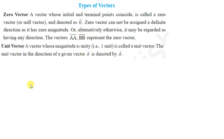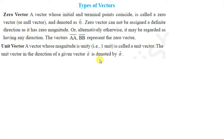Next is unit vector. Unit matlab one — a vector whose magnitude is unity, that is one unit, is called a unit vector. The unit vector in the direction of any vector is denoted by a cap (â). Kisi bhi vector ke direction mein jo unit vector hoga, usse hum a cap se denote karte hain.